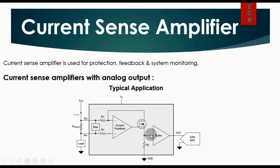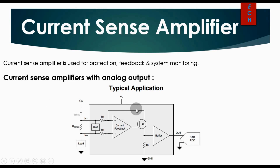There is a supply voltage, and they have an internal buffer. The output goes to a SAR ADC. This is the typical application of a current sense amplifier with analog output. Sometimes the common mode voltage of this current sense amplifier is greater than its supply voltage.